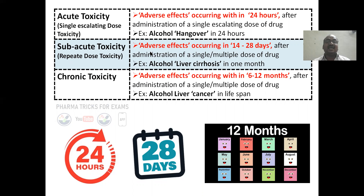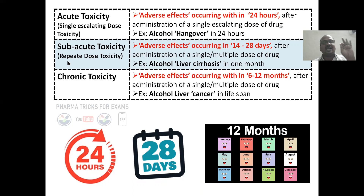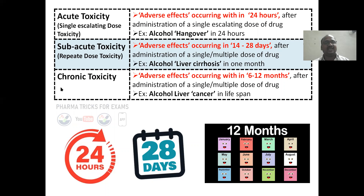Subacute toxicity: adverse effects occurring in 14 to 28 days after administration of a single or multiple dose. Side effects produced within 14 to 28 days is called subacute toxicity. That's why it is also called repeat-dose toxicity, whereas acute is called single escalating dose toxicity.